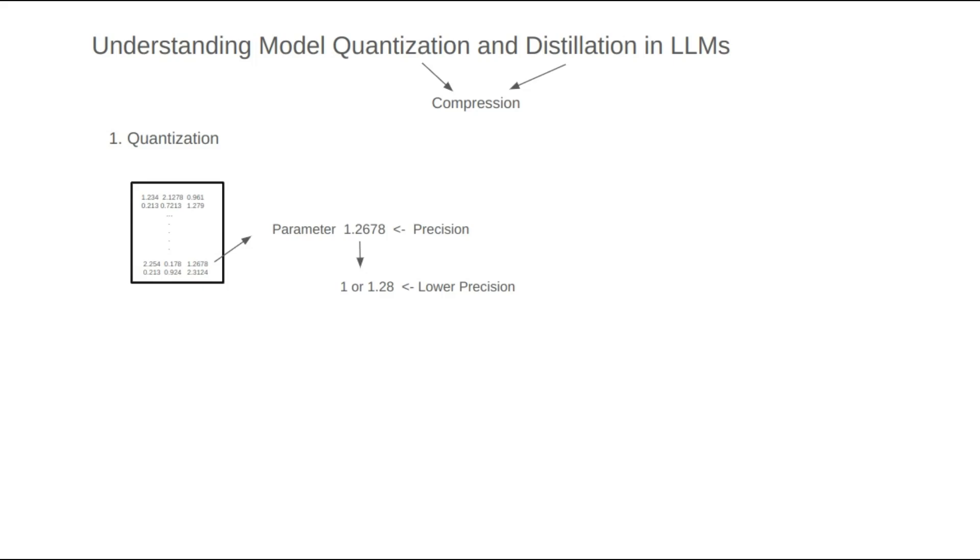This is the core idea of quantization. Using more precise computer terminology, a parameter in a large language model is typically represented as a float32 type, requiring 32 bits of space or 4 bytes. These are units of memory, with larger units like MB, GB, or TB used for larger scales. If we convert float32 parameters into float16 or int8 types, the space required is reduced.